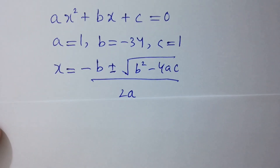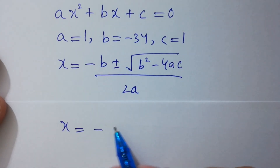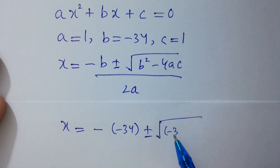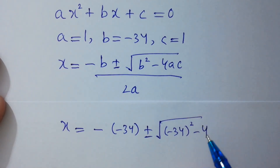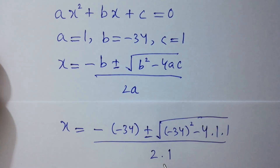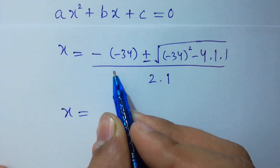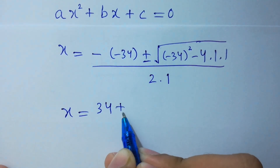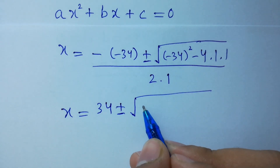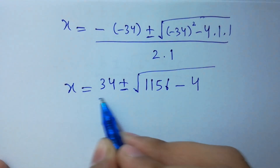Putting the values in: x equals minus (minus 34) plus or minus square root of (minus 34) squared minus 4 times 1 times 1, all over 2. This gives x equals 34 plus or minus square root of 1156 minus 4, over 2, which is 34 plus or minus square root of 1152, over 2.